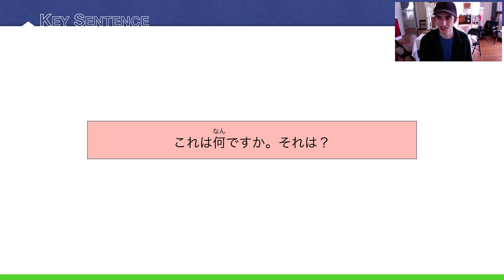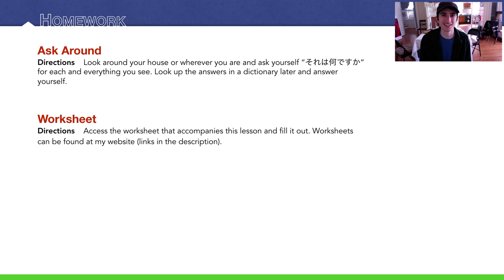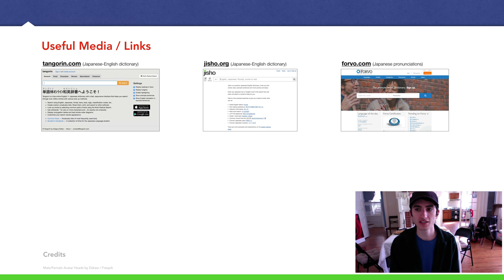Back to our key sentence: これは何ですか？ — 'What is this?' それは？ — 'What about that?' Hopefully you understand this by now. For homework: look around your house, neighborhood, or campus. Ask yourself それは何ですか？ あれは何ですか？ Look things up and answer yourself — make it a game. There's also a worksheet for this lesson. That's it — see you in future lectures. Cheers.